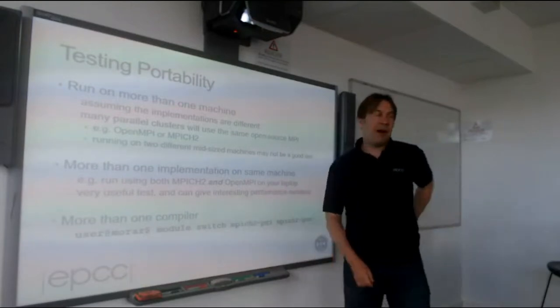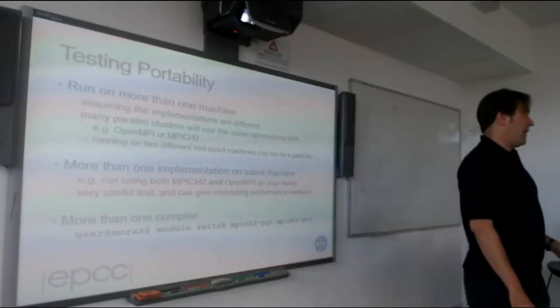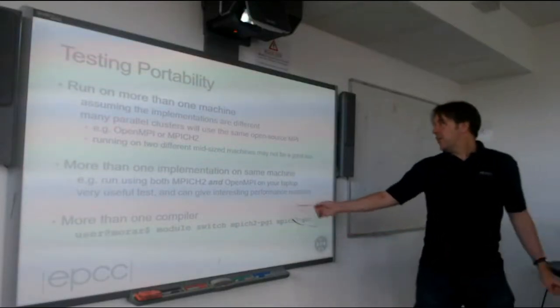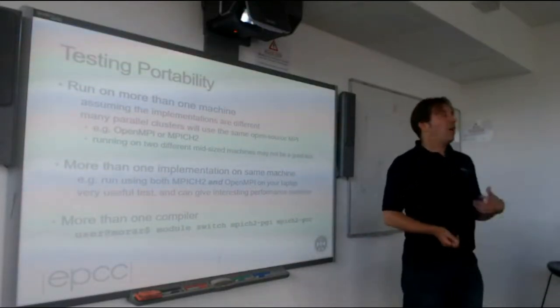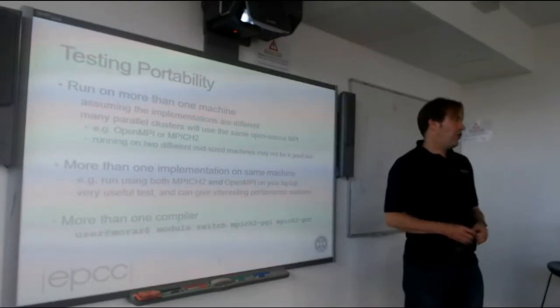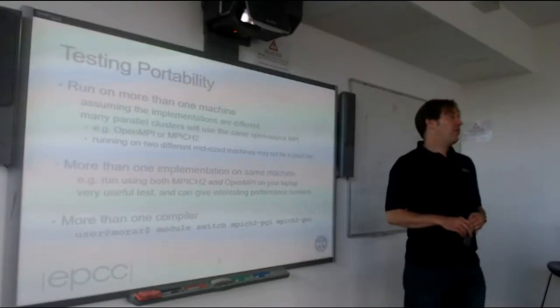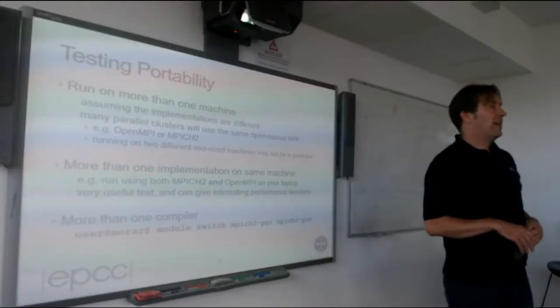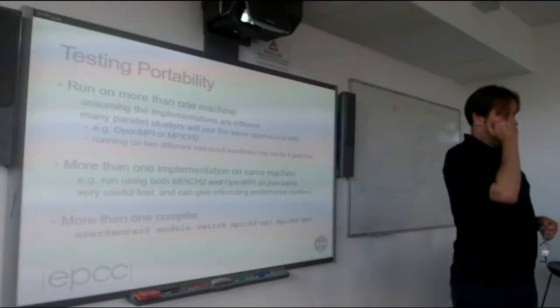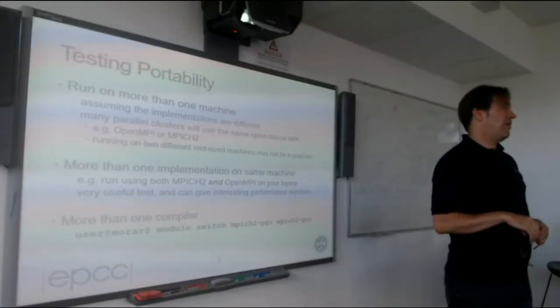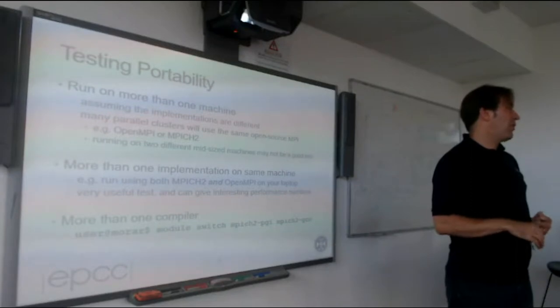It's very useful to install two MPI implementations on your laptop. So whenever your code goes wrong under one, you can run it under the other. And maybe you get a better error message. Just because your code works on open MPI doesn't mean it's correct. You want to run it on MPI CH2 just to check that you haven't made any assumptions. Get into the habit of running your code against multiple MPI libraries is a good thing to do, because you'll pick up bugs already. Similarly, you should compile with more than one compiler.